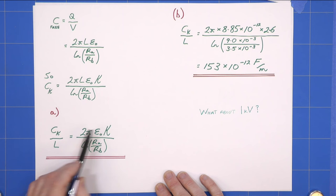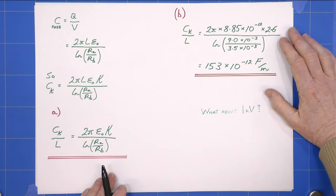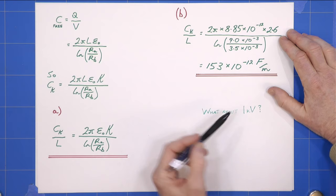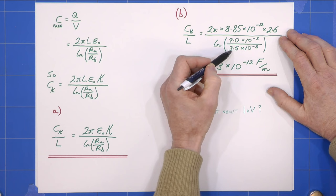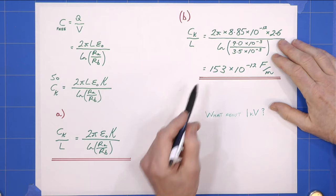Therefore our first answer is the capacitance per unit length, I've called it C_κ over L, equals 2π ε₀ κ over natural log RA over RB. That's the answer to part A. Plugging in the numbers where ε₀ is 8.85 times 10⁻¹² and κ is 2.6, RA and RB are given as 9 millimeters and 3.5 millimeters, gives us this answer: 153 times 10⁻¹² farads per meter.